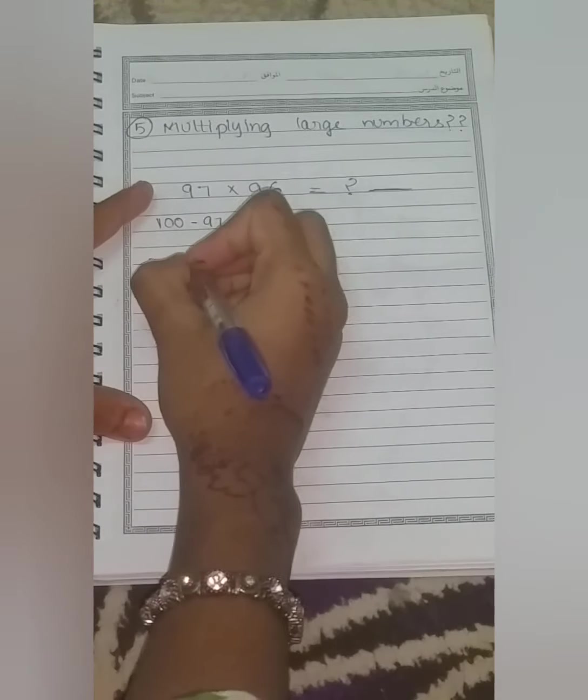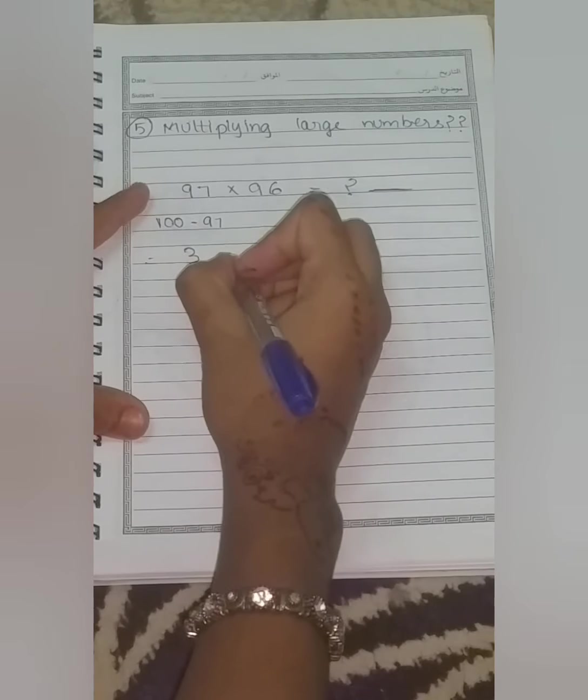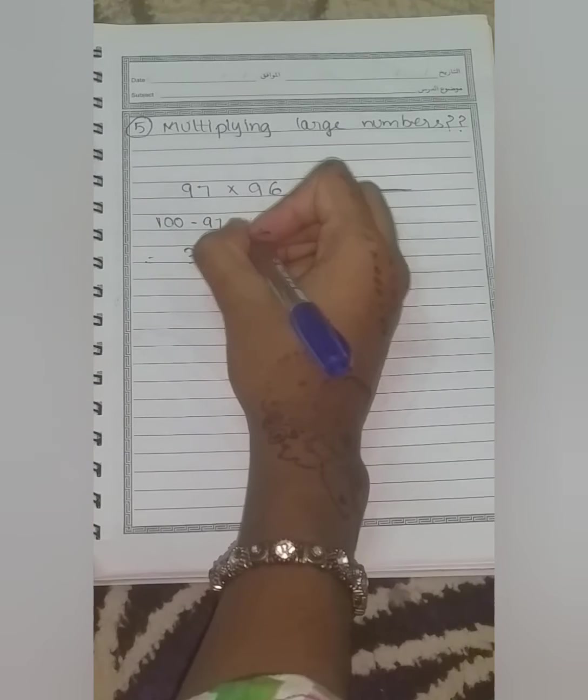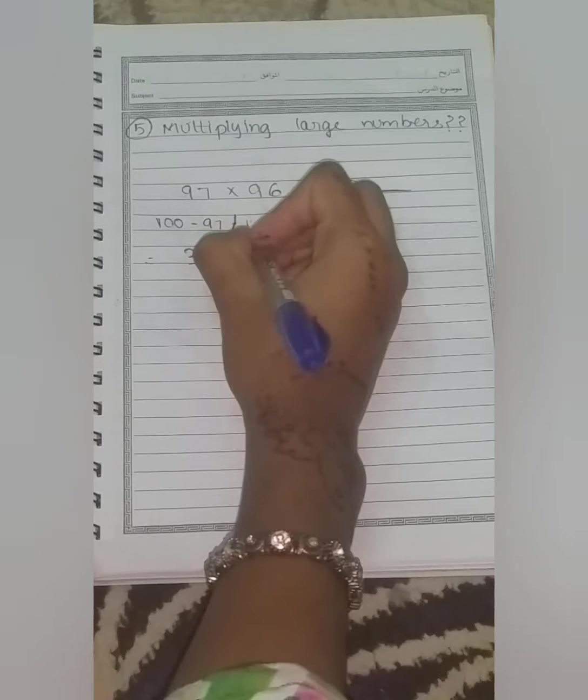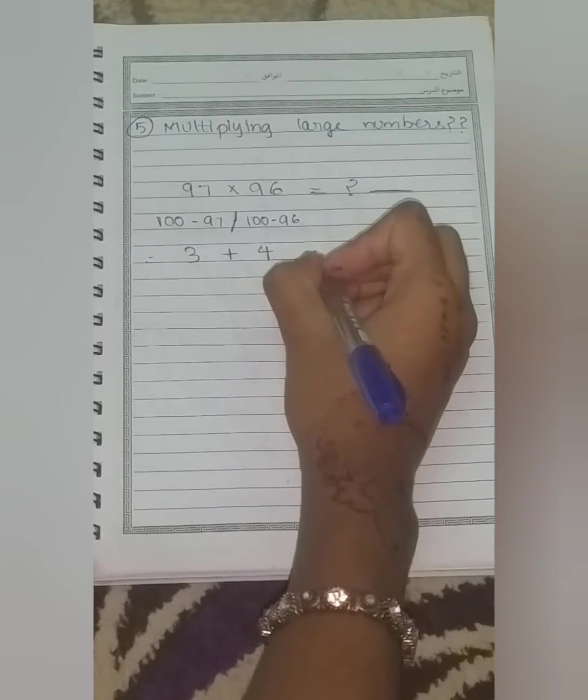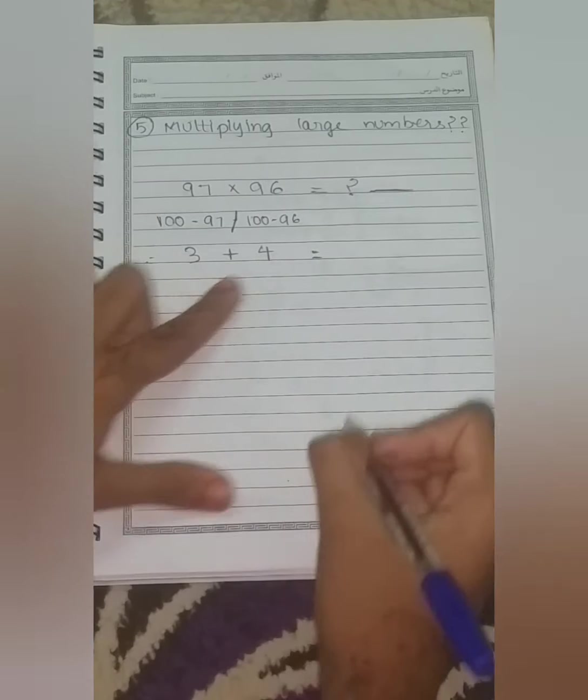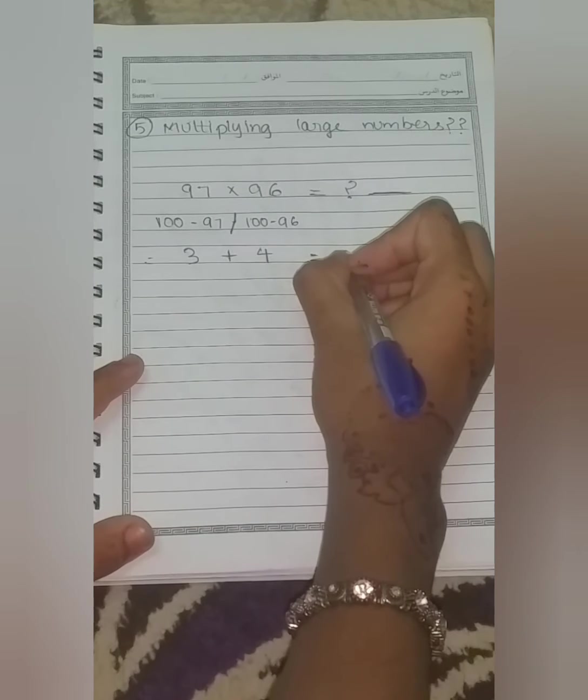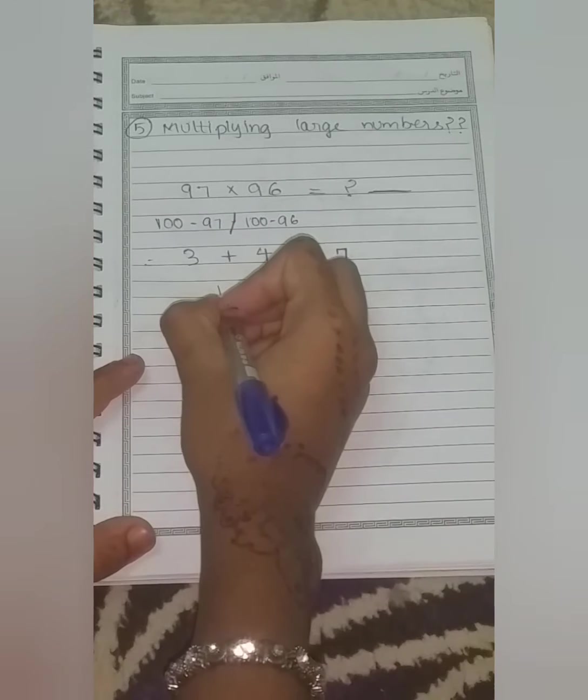So here we have a short formula. We should subtract the numbers with 100. Here first number is 3. We should now find the next number. That is 100 minus 96. Here we get the answer 4. So first of all, we should add these numbers. 3 plus 4 is equal to 7.